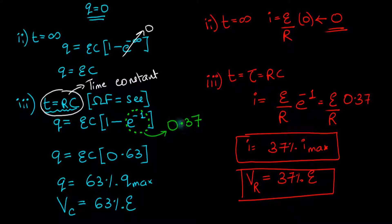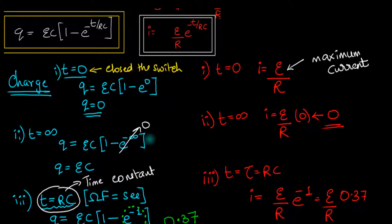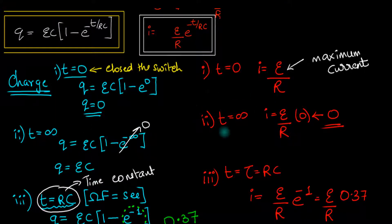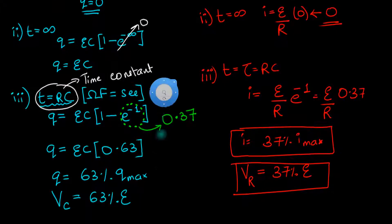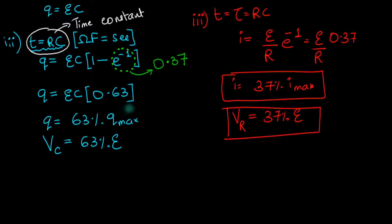This is important because theoretically the equations predict it takes infinite time for the current to become 0 or for the capacitor to get fully charged — but that's just theoretical. More practically, we don't need 100% charge; 99% or 99.9% is enough. Using the concept of time constant, we can evaluate how much time it takes to charge the capacitor to a very high value.